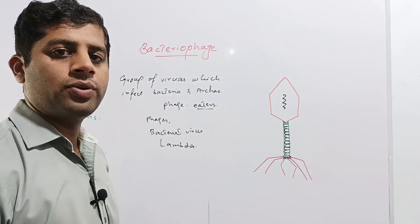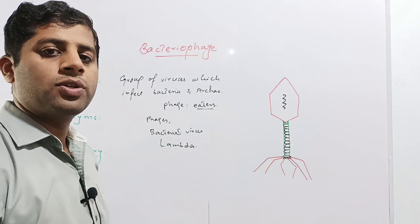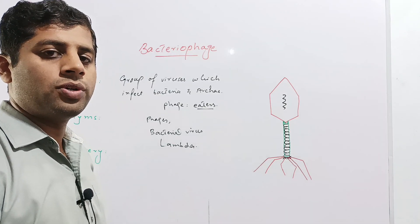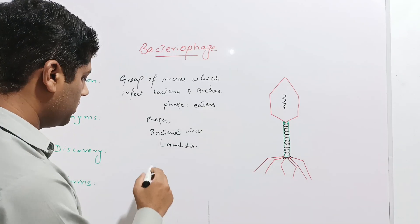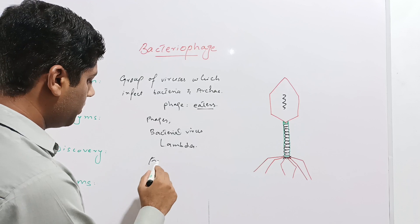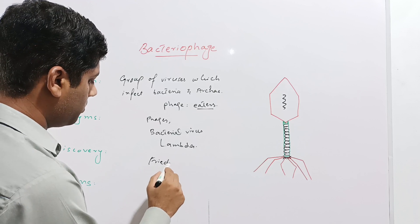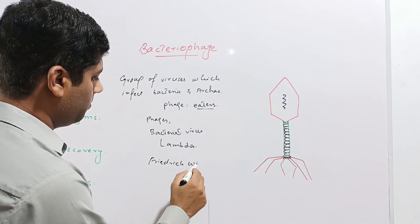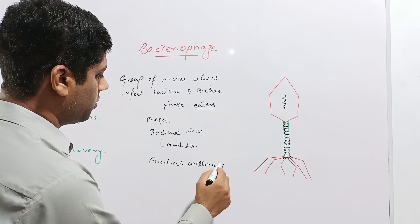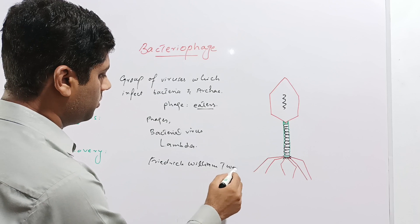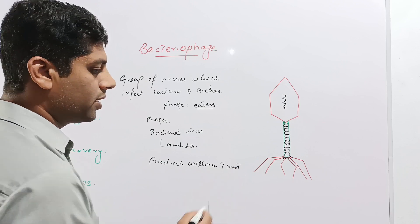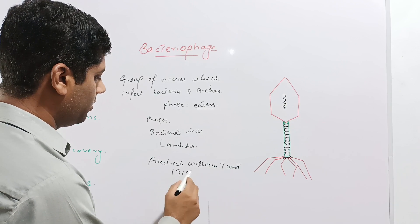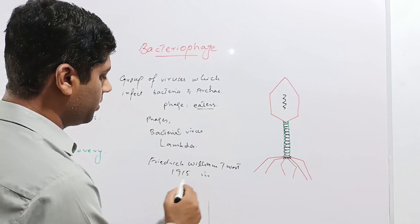The history or discovery of the bacteriophage: the bacteriophage was discovered by Frederick William Twort, an English scientist, in 1915 in Great Britain.